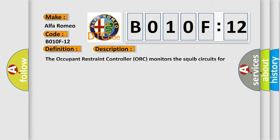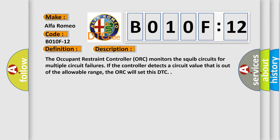And now this is a short description of this DTC code. The occupant restraint controller (ORC) monitors the squib circuits for multiple circuit failures. If the controller detects a circuit value that is out of the allowable range, the ORC will set this DTC.